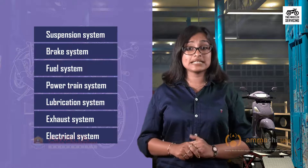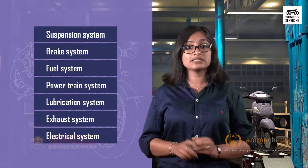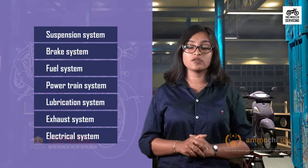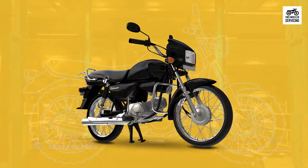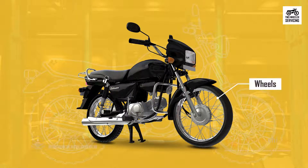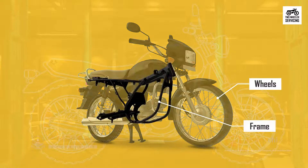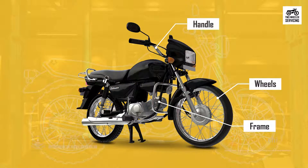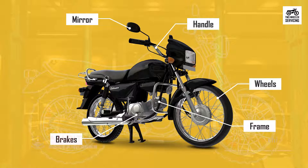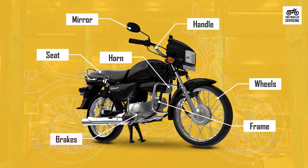Before we go into the various systems, let us learn to identify some general parts of a motorcycle. Similar to a bicycle, a motorbike has wheels, frame, handle, brakes, mirror, horn, seat, and fender for protection against the mud thrown into the air by the rotating tire.